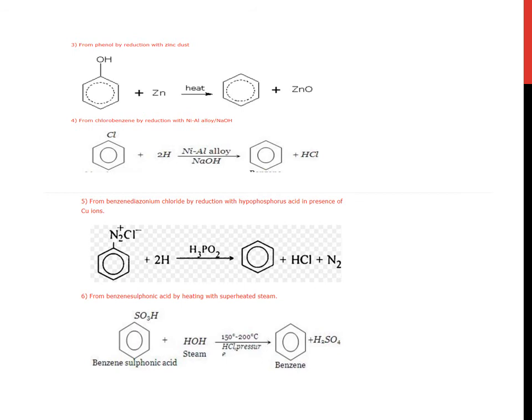Third, from phenol by reduction with zinc dust. From chlorobenzene by reduction with nickel aluminum alloy followed by sodium hydroxide. From benzene diazonium chloride by reduction with hypophosphorus acid in presence of copper. Benzene diazonium chloride when treated with H3PO2 gives benzene, HCl, and N2. From benzene sulfonic acid by heating with superheated steam: benzene sulfonic acid when treated with H2O gives benzene and sulfuric acid.